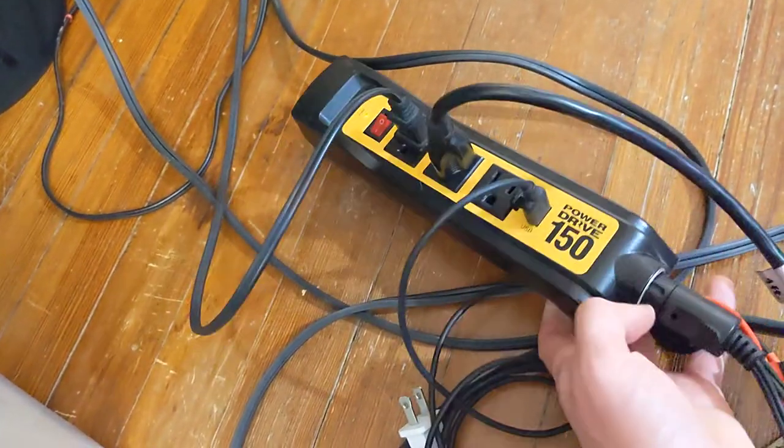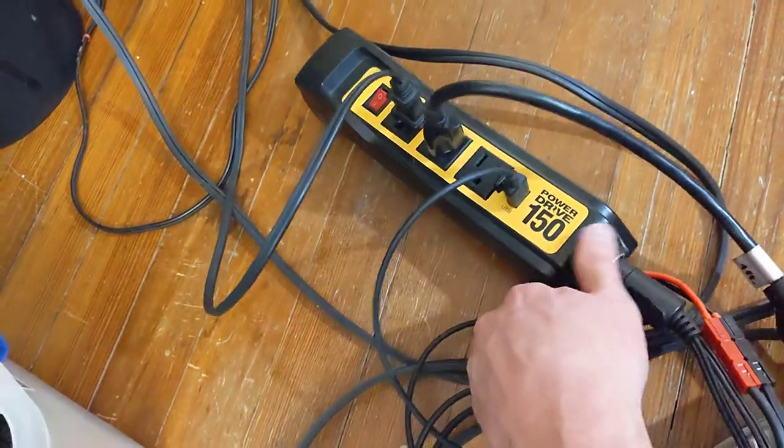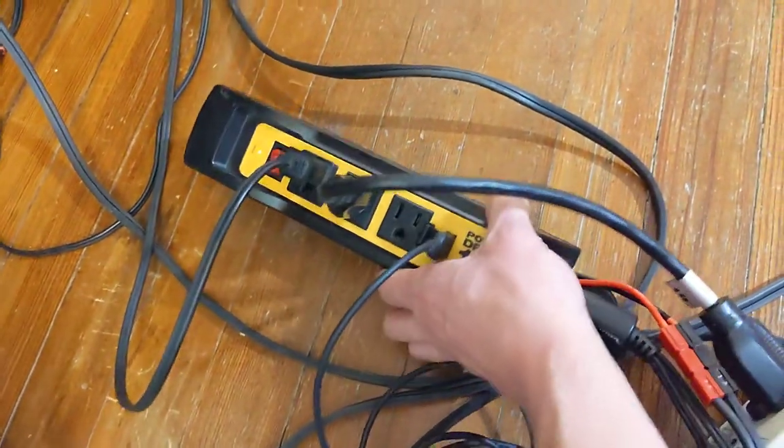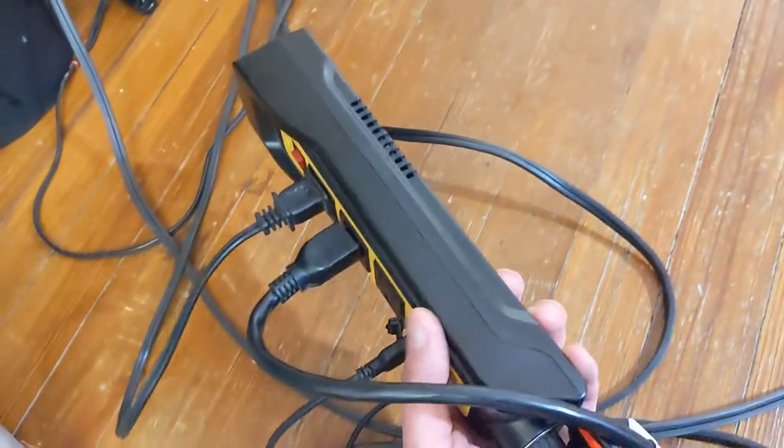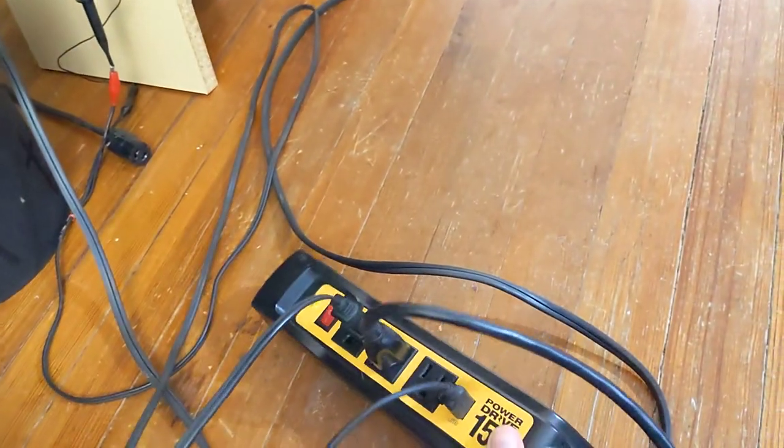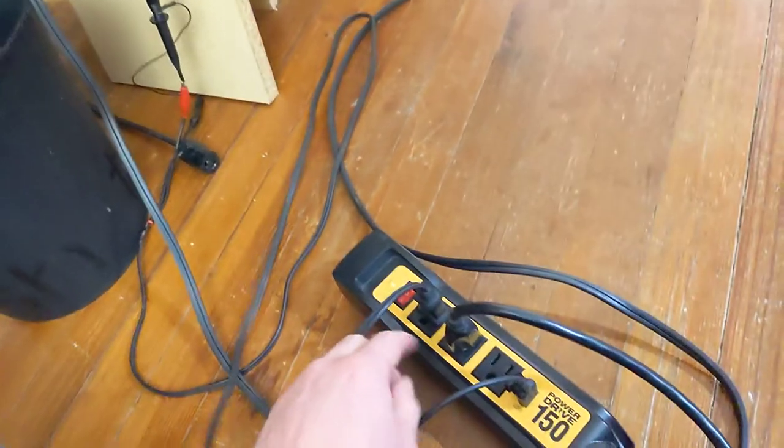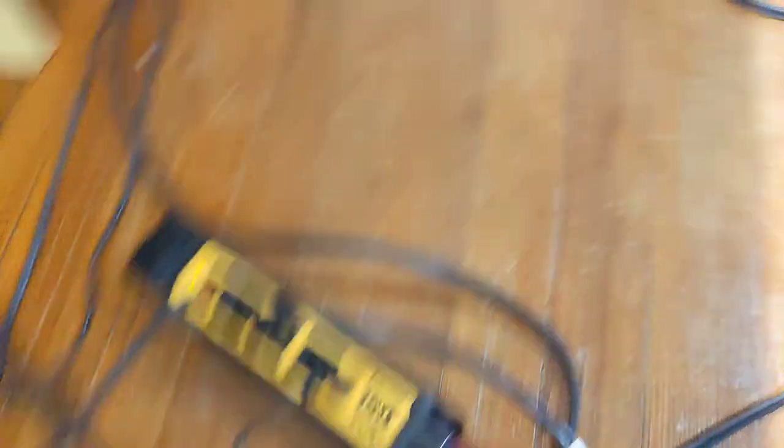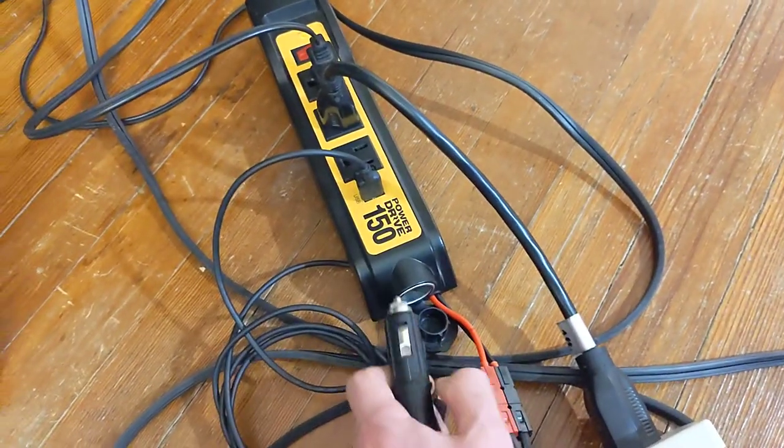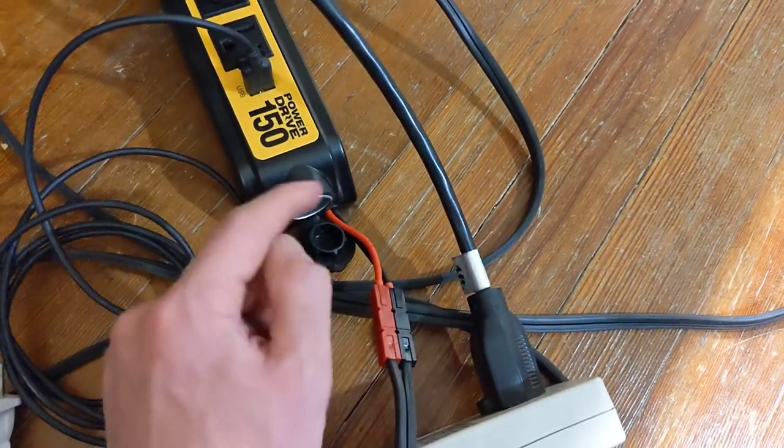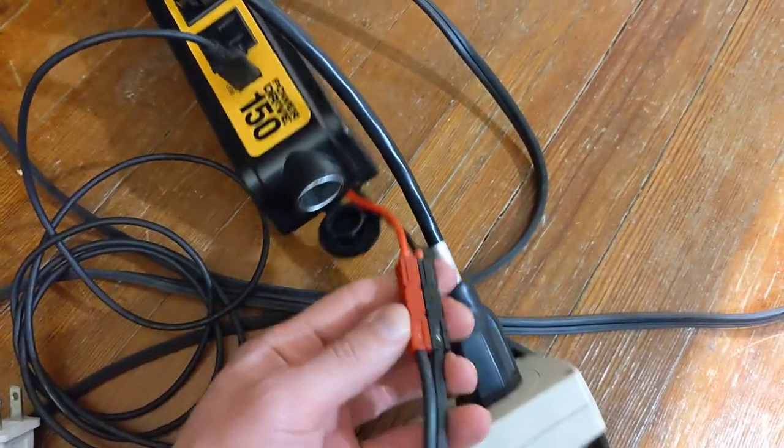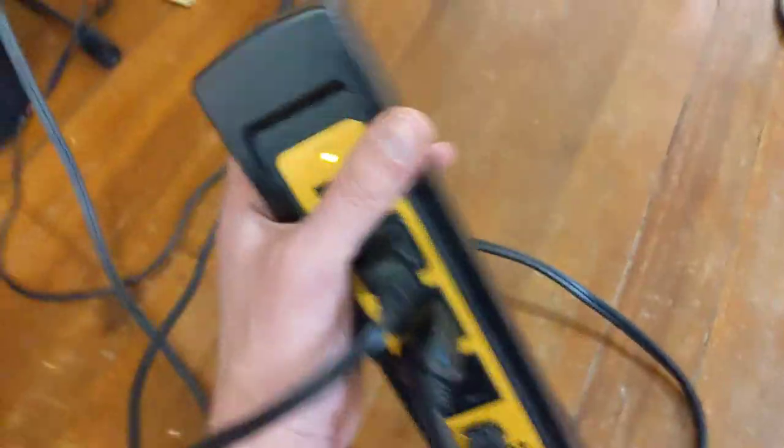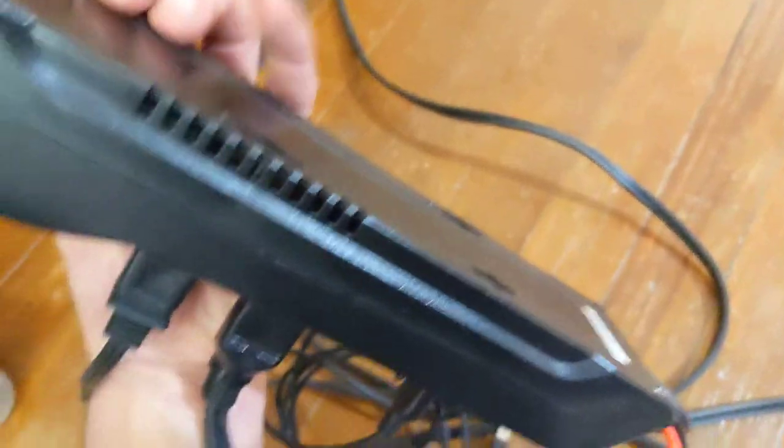This power inverter is actually really nice mainly because of its outer design. It's shaped similar to a power strip, giving you three AC outlets, USB charging, and a cigarette lighter plug. I modified this inverter to accept an Anderson PowerPole DC connector and changed the cooling fan to a quieter one.